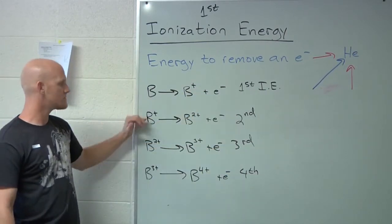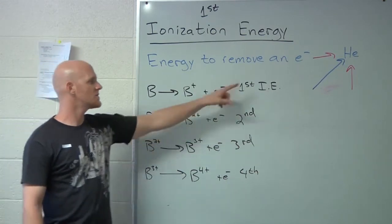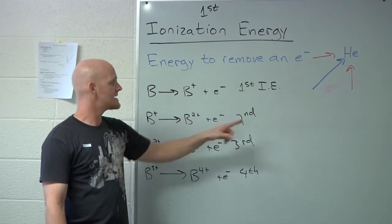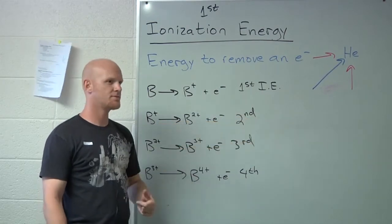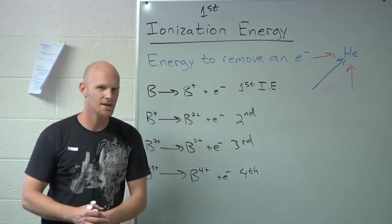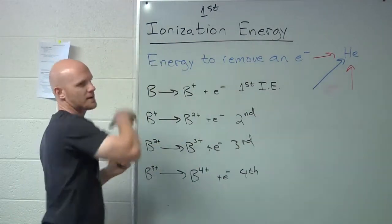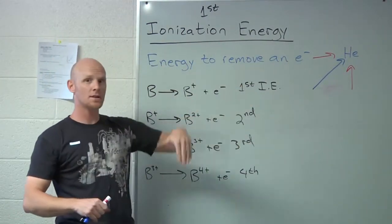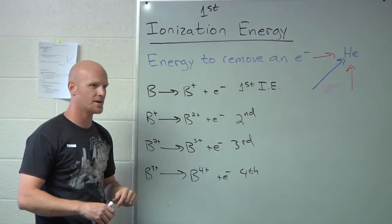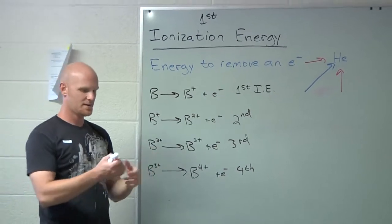But what we're going to find out with boron is that as we go from first to second, it gets a fair amount higher. As we go from second to third, it gets a fair amount higher again. As we go from third to fourth though, it gets a ton higher. Not just a fair amount, a lot, lot, lot more higher. It gets significantly higher.